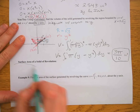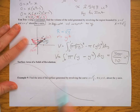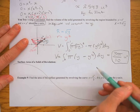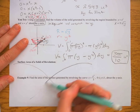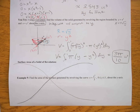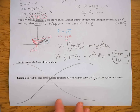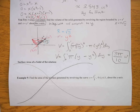For Calc AB we are not required to do surface area of a solid of revolution, so we'll skip that one. We are done with what we need to know from chapter seven. See you tomorrow in class where we'll work out some of these problems, and please come during tutorial if you have any questions.